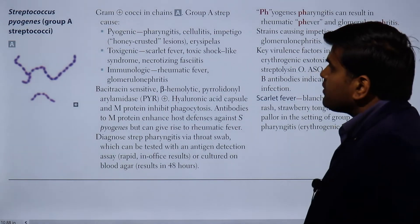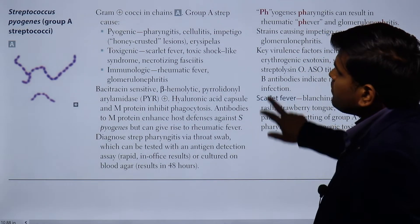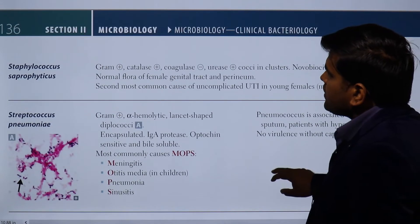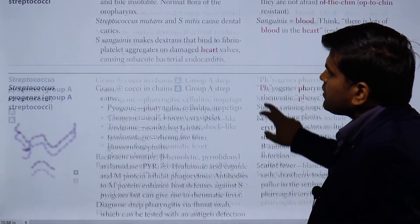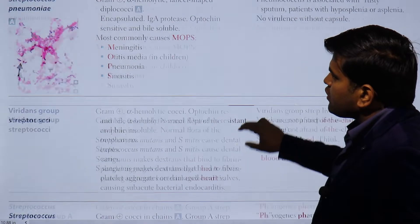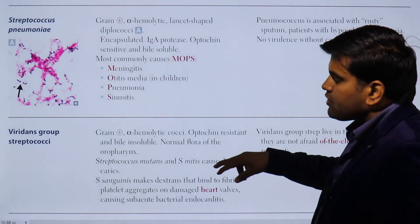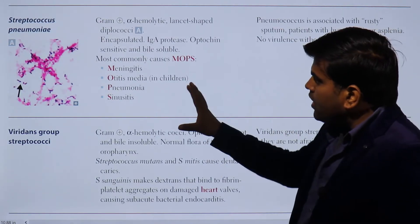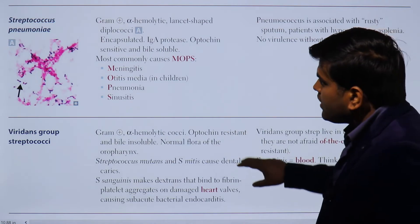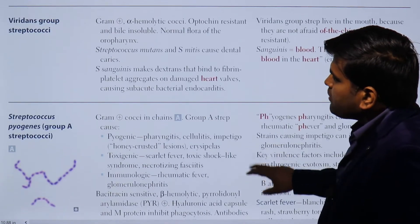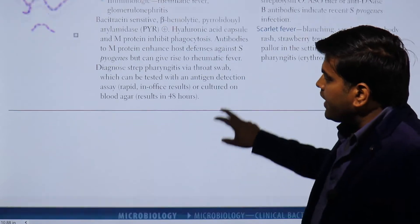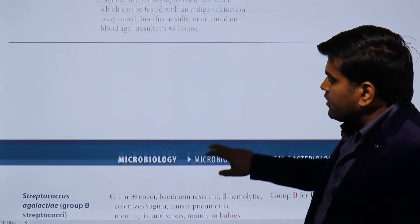Welcome again. We are on page 136, continuing our discussion. We have previously discussed Streptococcus pneumoniae and the viridans group of Streptococcus, which are alpha hemolytic — that is, partial hemolysis. Now we come to the group that causes complete hemolysis: Streptococcus pyogenes and Streptococcus agalactiae.